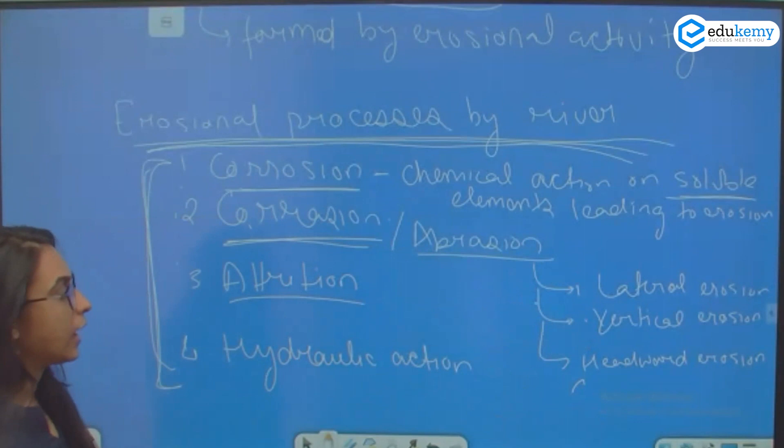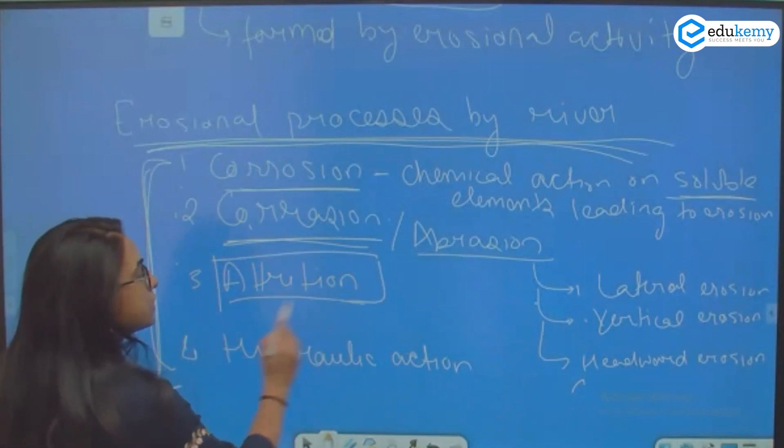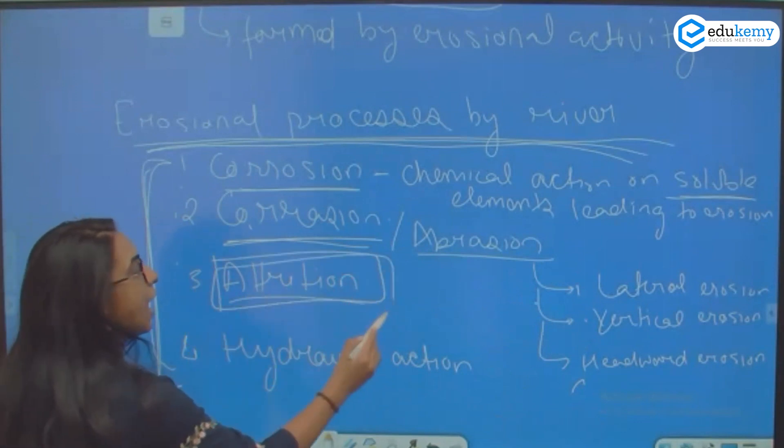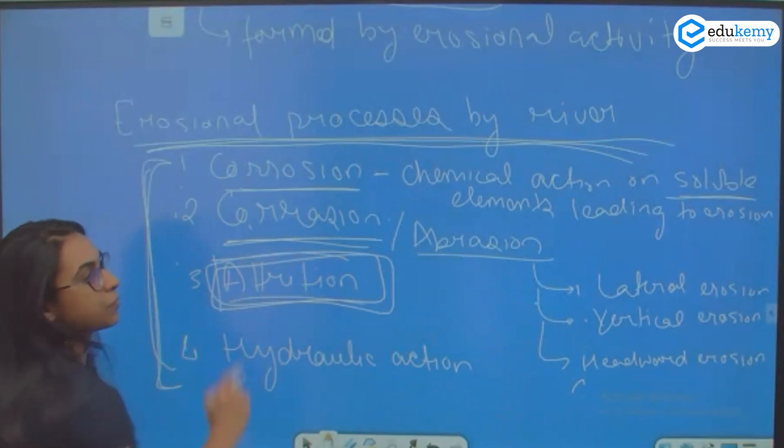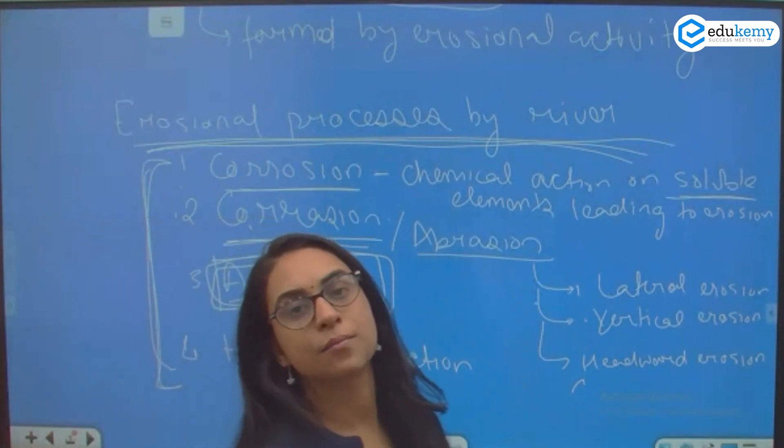The third type of erosion by the river is attrition. Do you know what the word attrition means?